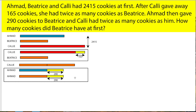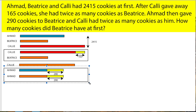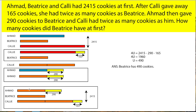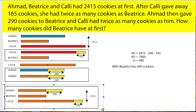Ahmad then gave 290 cookies to Beatrice, and Kelly had twice as many cookies as him. So Ahmad gave away 290 — you have to take away 290 from Ahmad. After you know that, you have to take away 165 and 290 because now Beatrice has 290 more than Ahmad.